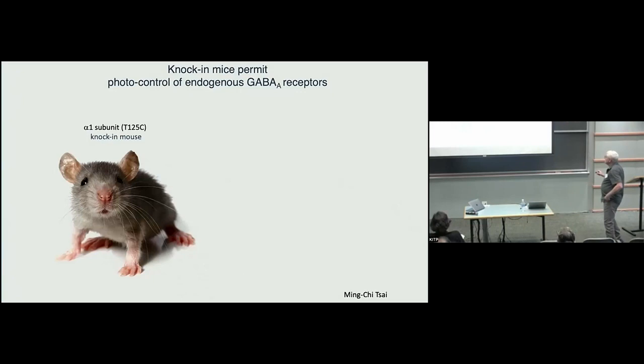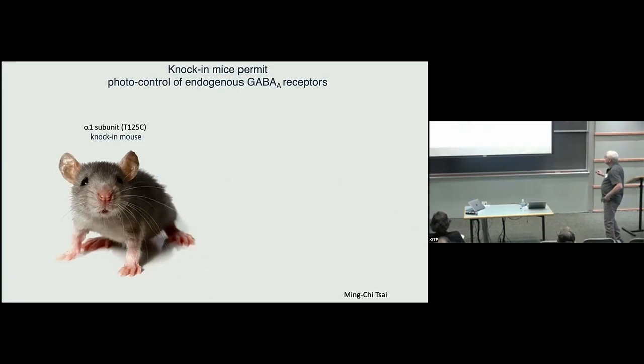If you take this alpha one mouse and look at different cells in the nervous system that we think express alpha one, for example Purkinje or basket cells in the cerebellum, you find that you can photo regulate the IPSCs just in the way I showed you previously. Whereas if you look at another cell that is not thought to express alpha one, you see no effect of light. So that kind of aligns and we've done it with other parts of the nervous system as well.